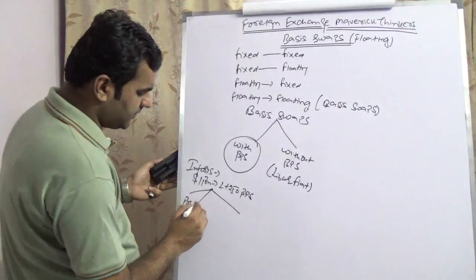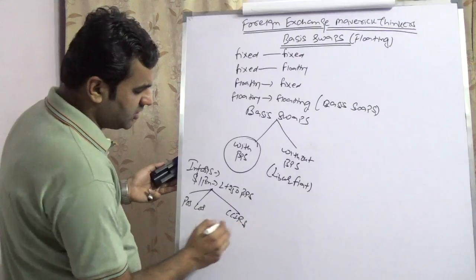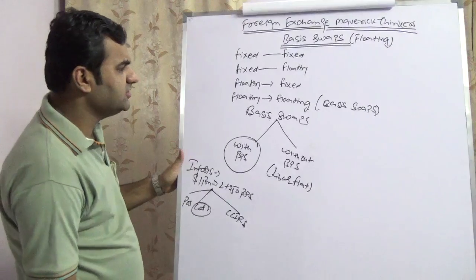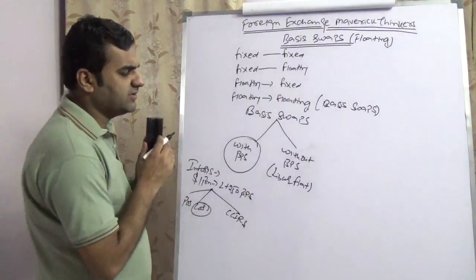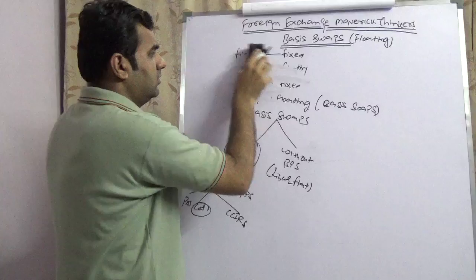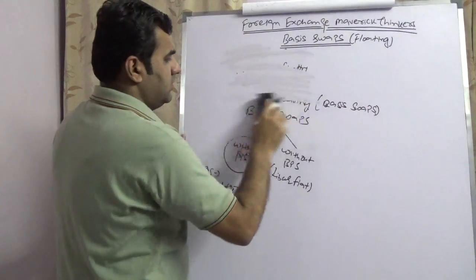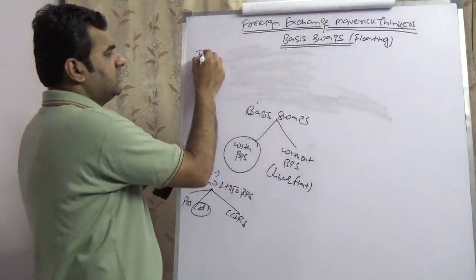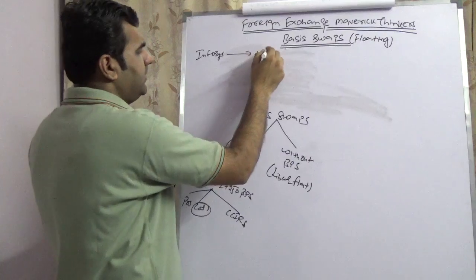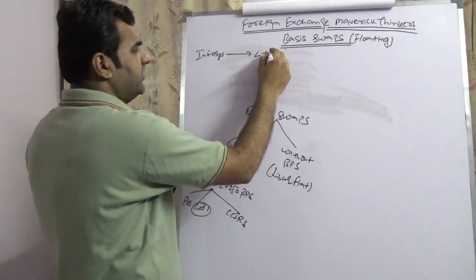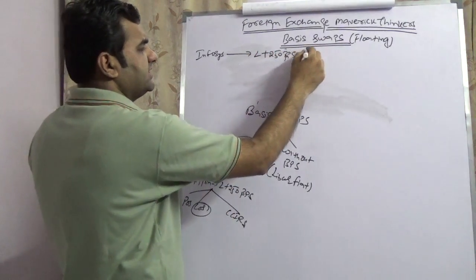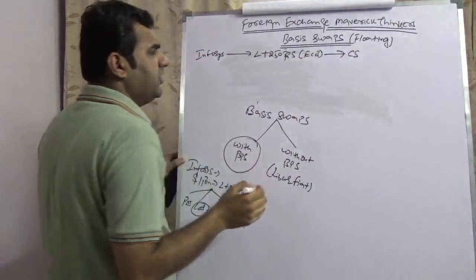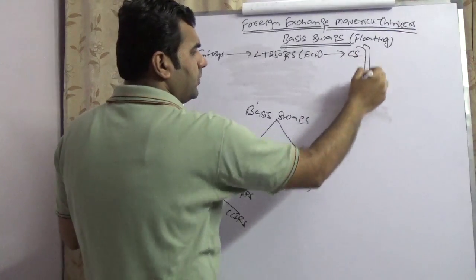That LIBOR plus 250 basis points can be hedged in three ways: principal only swap, coupon only swap, and cross-currency interest rate swap. To cover the basis swap, we're going to use the coupon only swap. Infosys is paying LIBOR plus 250 basis points on an ECB loan to a bank, say Credit Suisse. They want to hedge that via a coupon only swap.